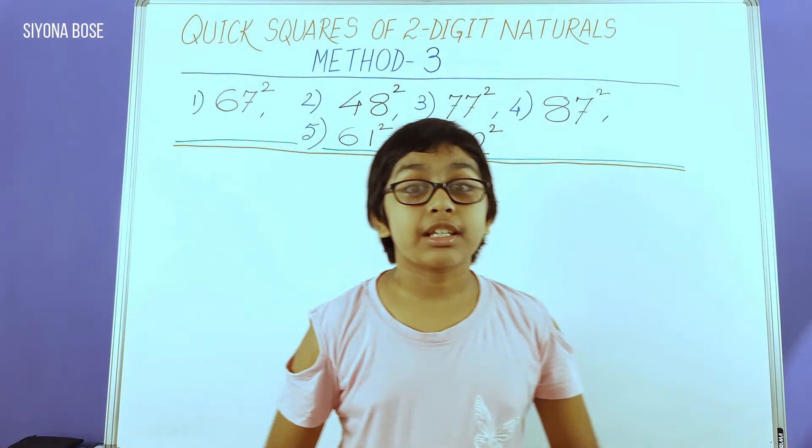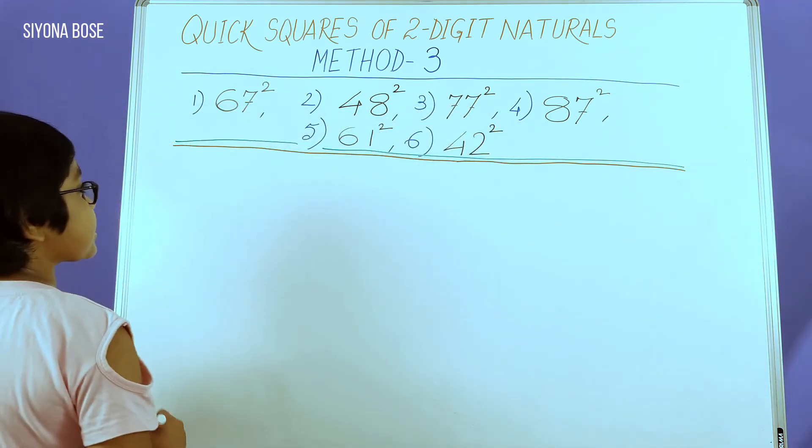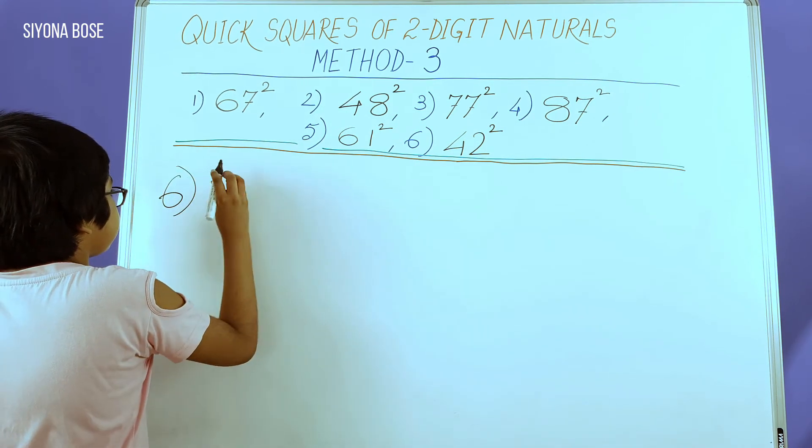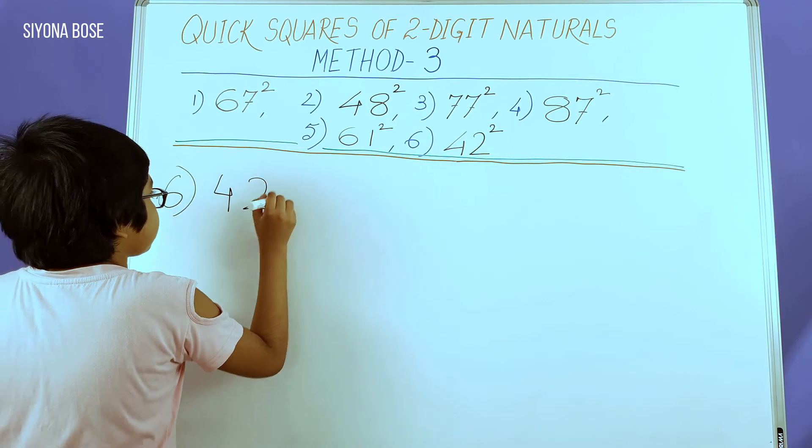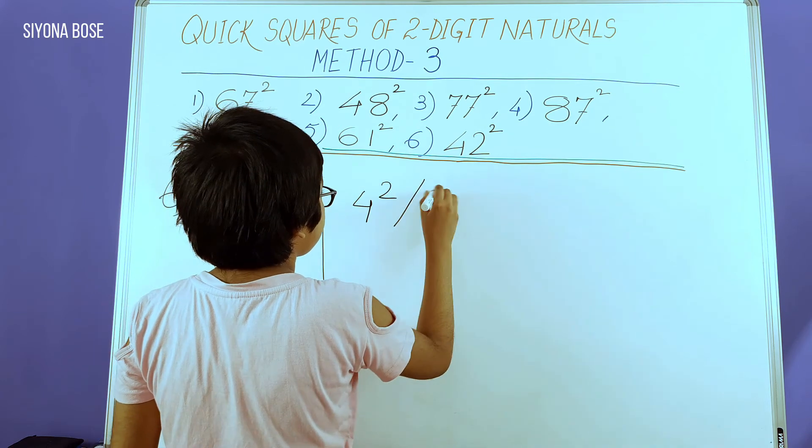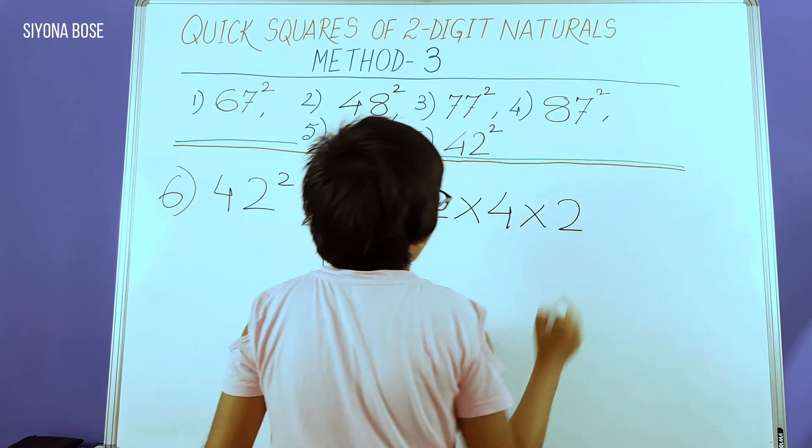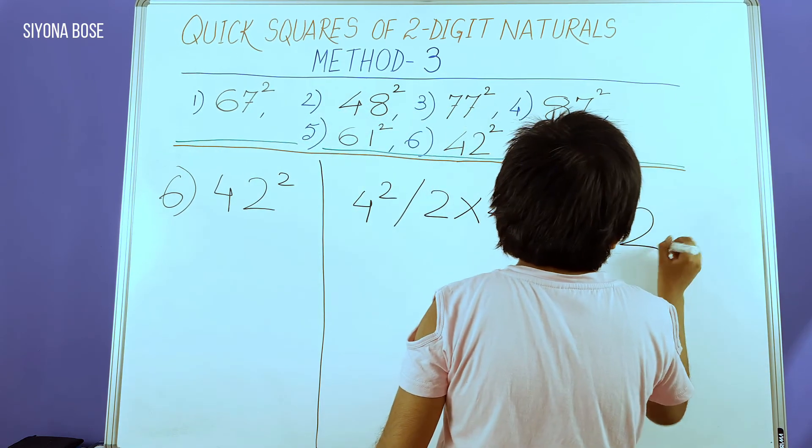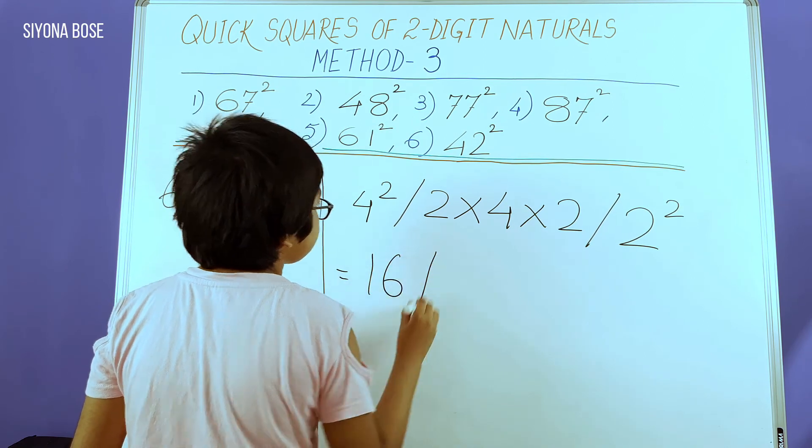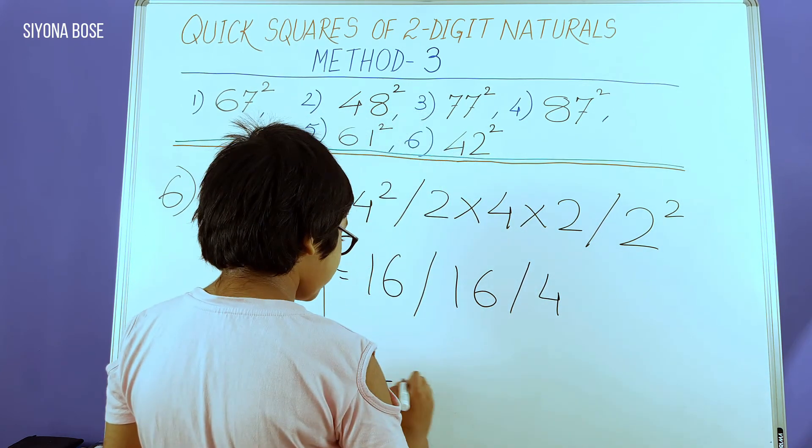Now we can move on to our last square, 42 squared. This is as simple as 61 squared. As usual, we are following the same steps. Simplifying it, we get 16, 16, and 4. 4 digits.